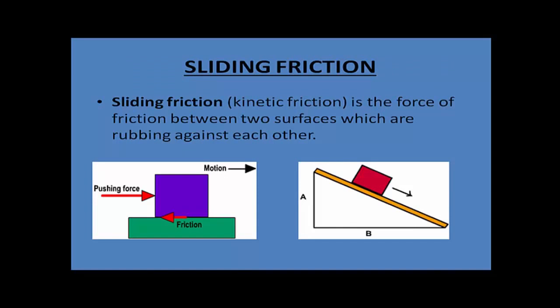Sliding friction is also called kinetic friction. It is the force of friction between two surfaces when they are rubbed against each other. Looking at the pictures on the slide, in the left picture the object is sliding over a flat surface, and in the right picture the object is sliding over a slant surface. In both cases the friction acting is called sliding friction.